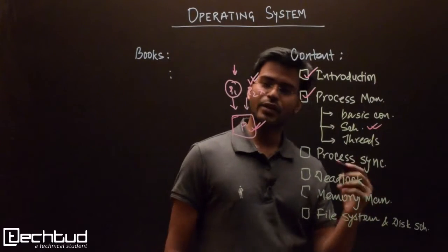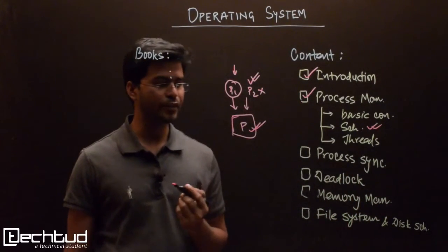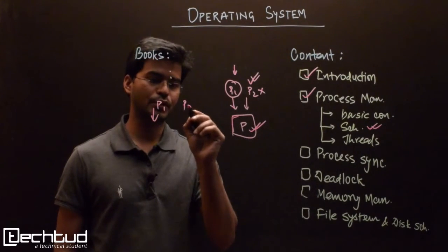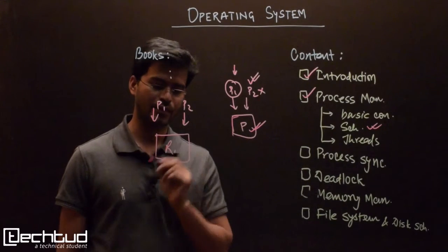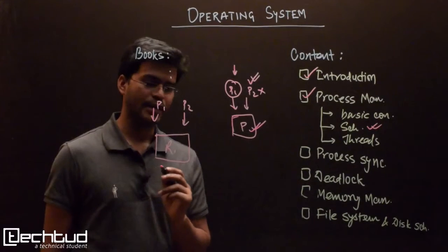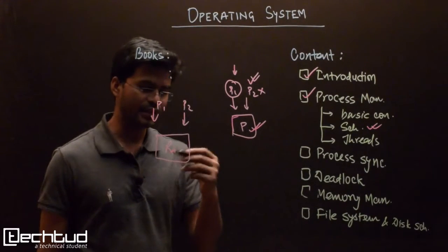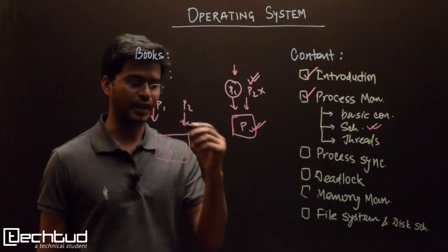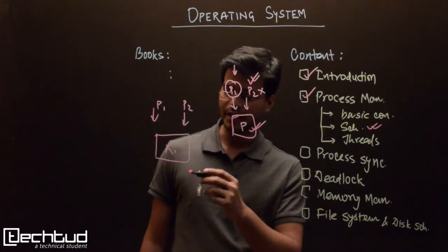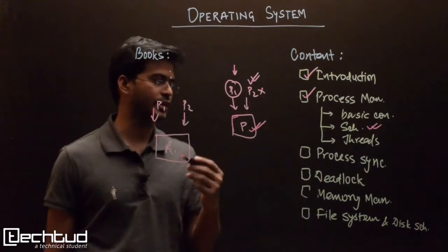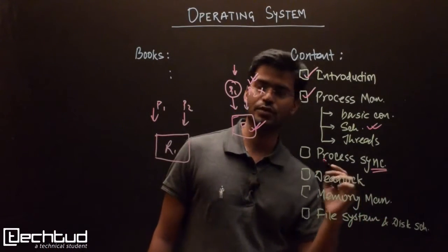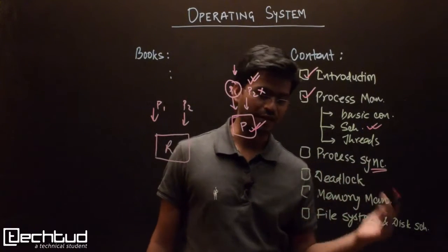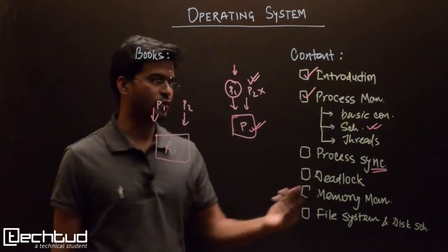As I said, with multiple processes we need to synchronize their execution. Normally there won't be any problem, but let's say we have two processes P1 and P2, and both are using a shared resource R1 — meaning these processes are reading or writing this resource. Usually reading doesn't create a problem, but when writing is involved it can create inconsistency. In that case we need a synchronization mechanism to ensure everything is going correctly.